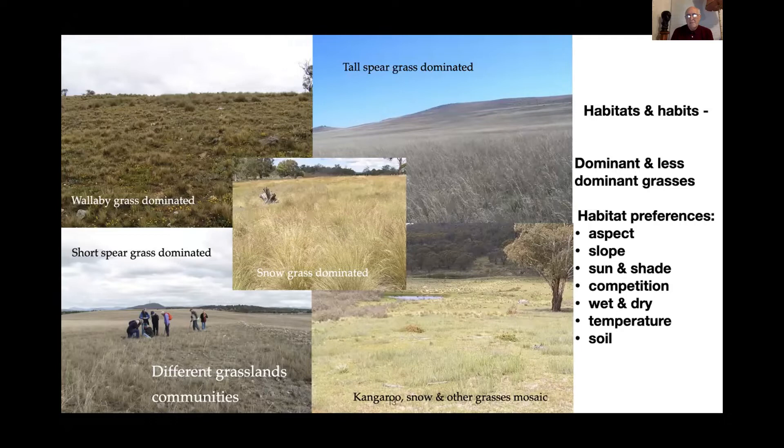Another common native grass is snow grass or river tussock, shown in the middle. The bottom slide shows a whole range of different grasses growing together. Things that affect grasses include their aspect, slope, whether they like sun or shade, how well they compete, whether they prefer wet or dry conditions, temperature, and what sort of soil temperatures they can tolerate.